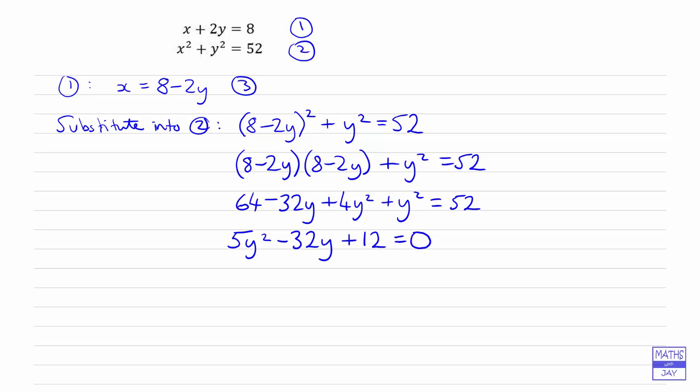We can now factorize this. It's not too bad because we've got a prime number multiplying the y squared, so we must have 5y and y. We have got plus in front of the constant but minus in front of the other term, in front of the 32y. So we know we must have a minus and a minus. The next part's a bit tricky because we know that 12 can be written as 1 times 12, 2 times 6, and 3 times 4.